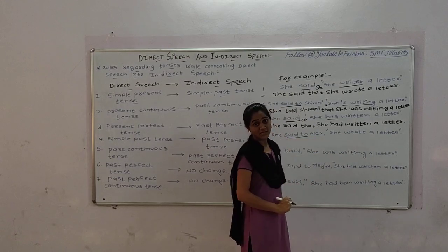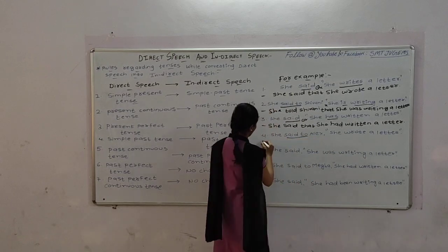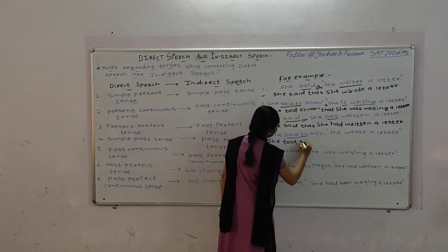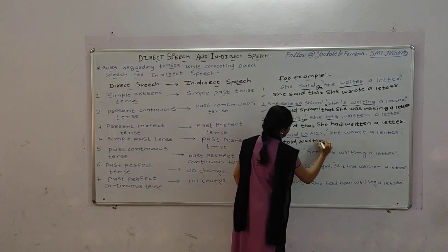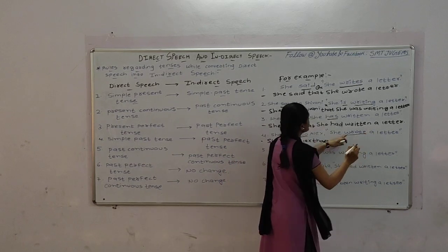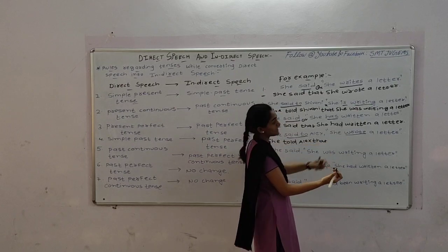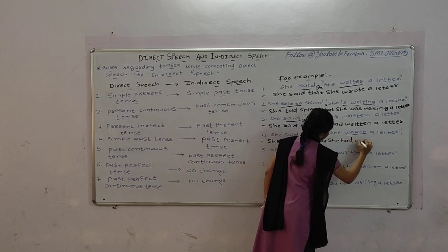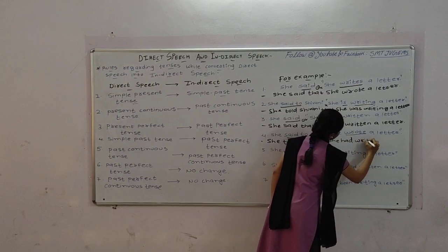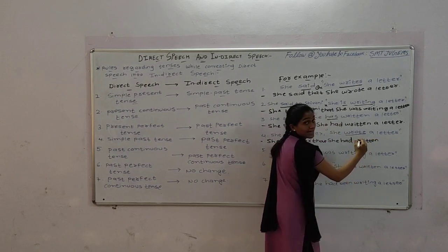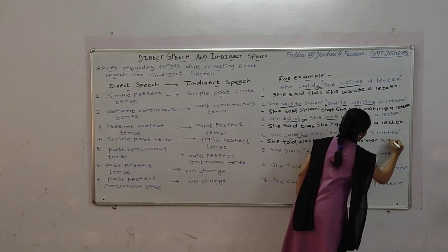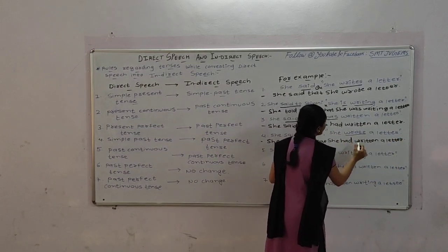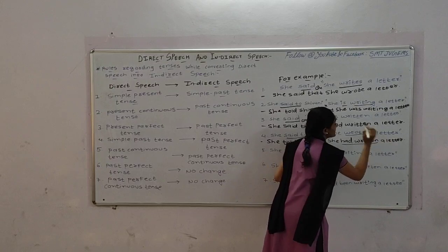The word 'wrote' will change — she told that she had written her letter. Full stop. So in simple past tense, it changes into past perfect: 'wrote' changes into 'had written'. Understood?